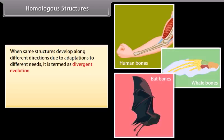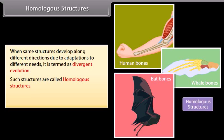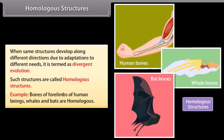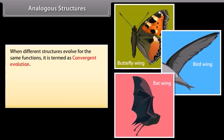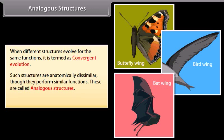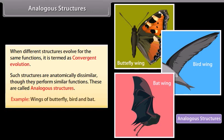Homologous Structures: When the same structures develop along different directions due to adaptations to different needs, it is termed divergent evolution. Such structures are called homologous structures. Example: bones of forelimbs of human beings, whales and bats are homologous. Analogous Structures: When different structures evolve for the same functions, it is termed convergent evolution. These structures are anatomically dissimilar though they perform similar functions, and are called analogous structures. Example: wings of butterfly, bird and bat.